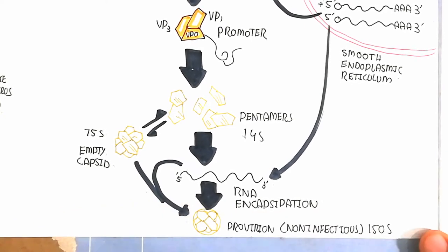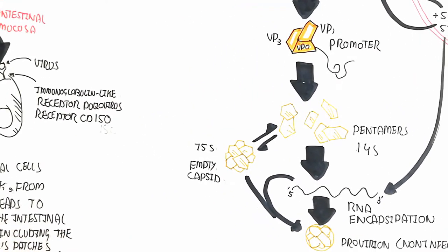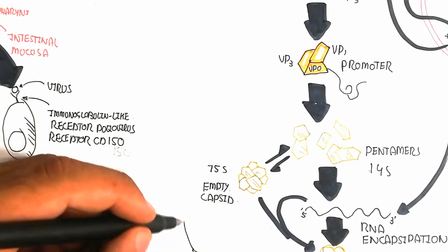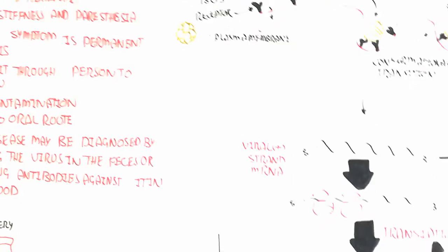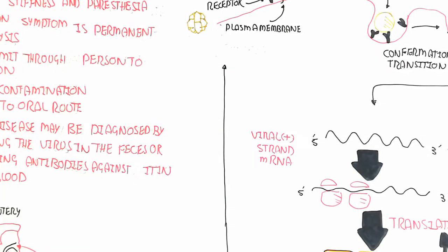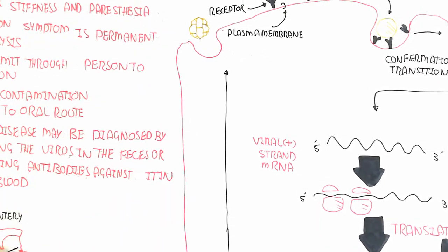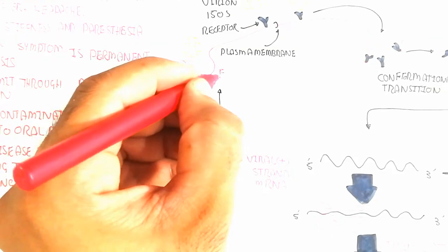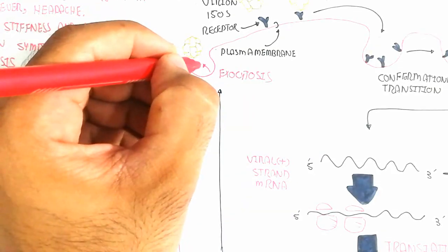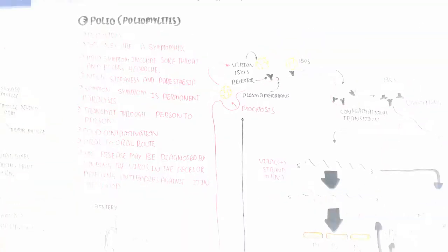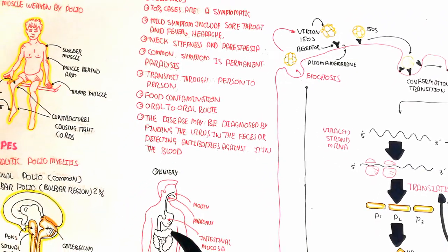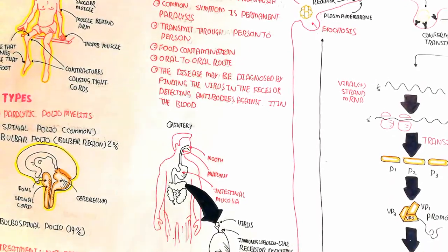This complete infectious particle will be exocytosed, and this exocytosis will lead to further infection. In this case, the damage, the tissue damage of the spinal cord cells, the nerve cells. The major site for damage is the spinal cord. I hope you make sense about this. This was the overview of poliomyelitis.